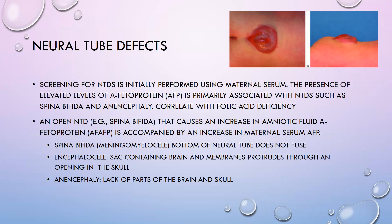Spina bifida, also known as meningomyelocele, is where the bottom of the tube does not fuse. Encephalocele is where the sac containing the brain and the membranes protrudes through an opening in the skull. And anencephaly involves the absence of large parts of the brain and skull. In all of these conditions, if alpha-fetoprotein is increased, you can suspect a neural tube defect.